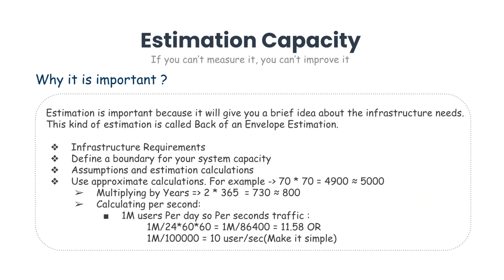The next step is system capacity estimation. If you can't measure it, you can't improve it — because if you can't measure something and know the results, you can't possibly get better at it. Estimation is important because it will give you a brief idea about infrastructure needs. This kind of estimation is called back-of-the-envelope estimation. This step is also important because here you will define a boundary for your system capacity, so that if your application becomes popular it should be able to handle the load, or at least you should know how much load the application can handle. Since you don't have any real numbers during design, you can make some assumptions, and based on those assumptions you can calculate all the different estimations. Using common assumptions will help you calculate very quickly.